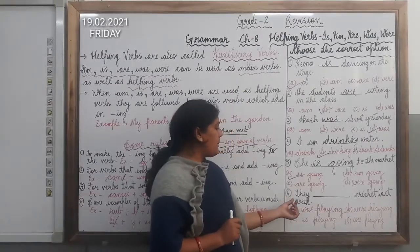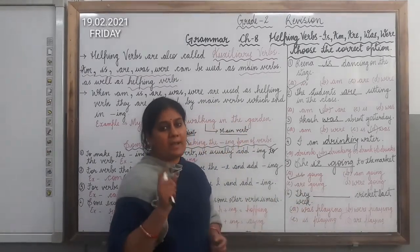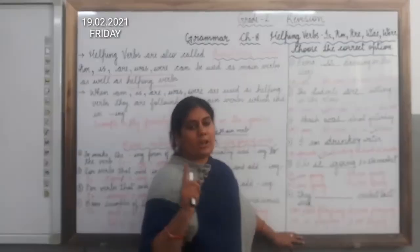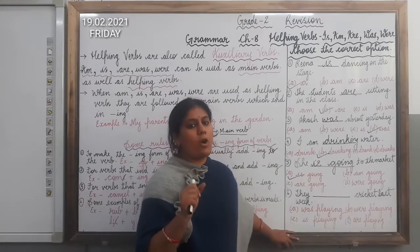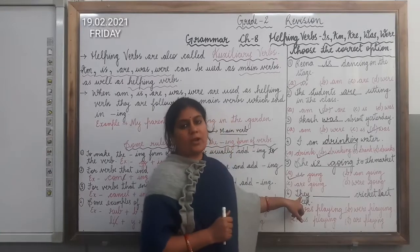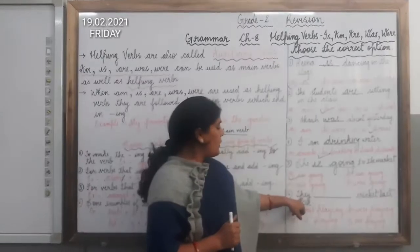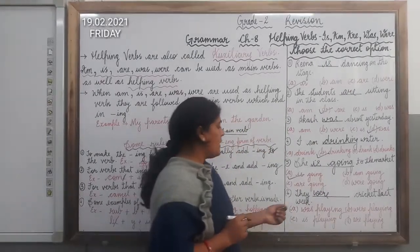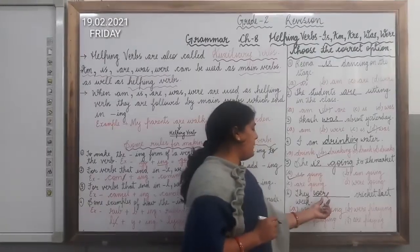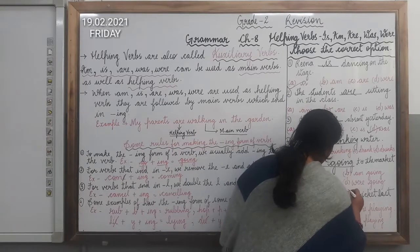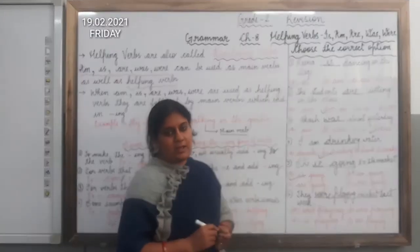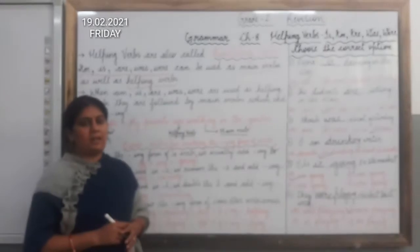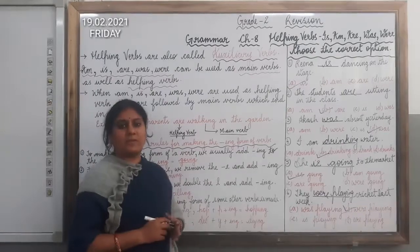Now the sixth question is: They ___ cricket last week. The sentence is in the past tense because we are talking about last week — the week which has already gone. So here we are talking about past time, that means we will use was or were. We are talking about they, which is used for plural. So we will use the helping verb were. And we will write playing. So the answer is: They were playing cricket last week. Were is used with the plural nouns and they.